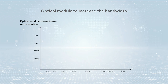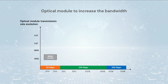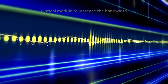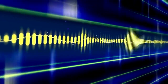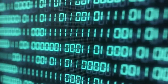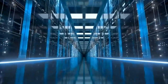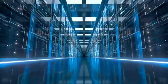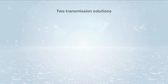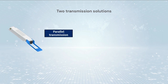There are two ways for an optical module to increase bandwidth: one is to increase the bit rate of each channel, such as directly increasing the baud rate or using complex modulation and demodulation methods such as PAM4; the other is to increase the number of channels, such as increasing the number of parallel fibers or using WDM, CWDM, or DWDM.